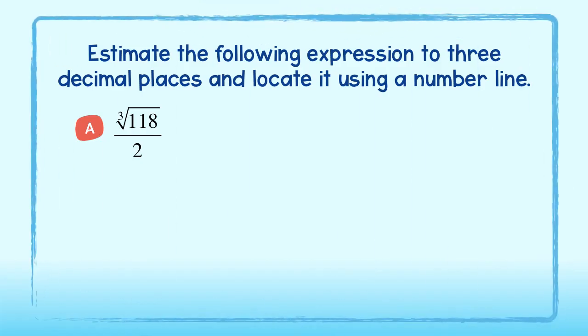Estimate the following expression to 3 decimal places and locate it using a number line. The cube root of 118 divided by 2 truncated to 3 decimal places is 2.452.